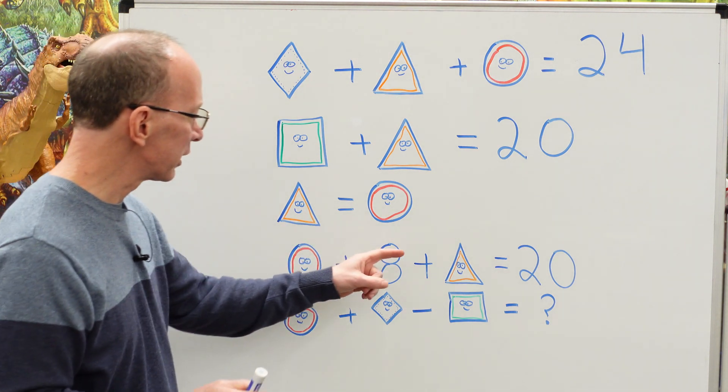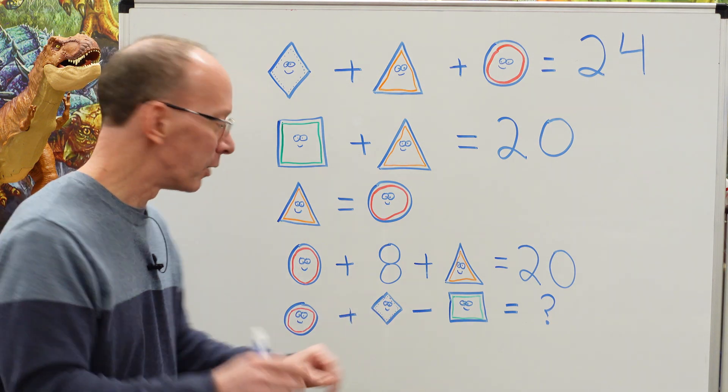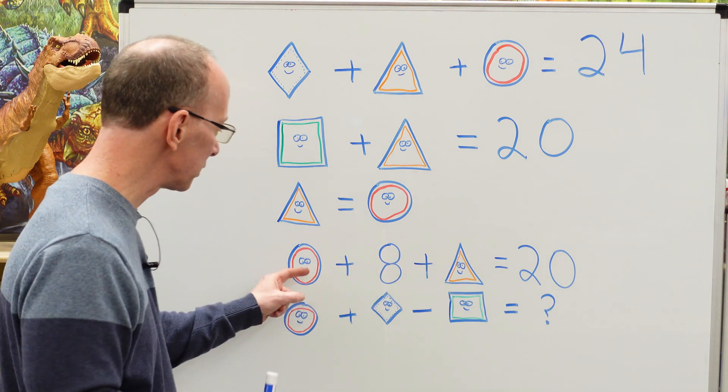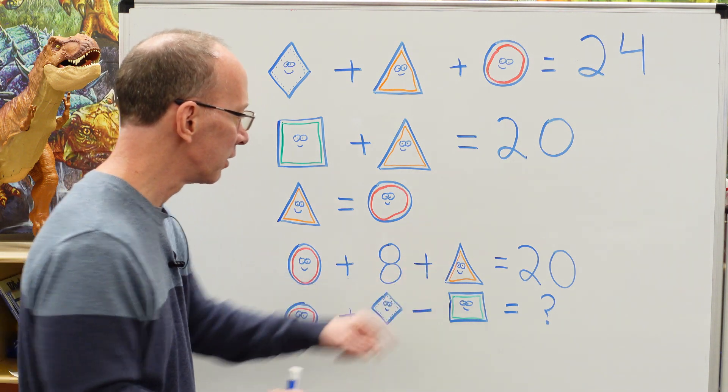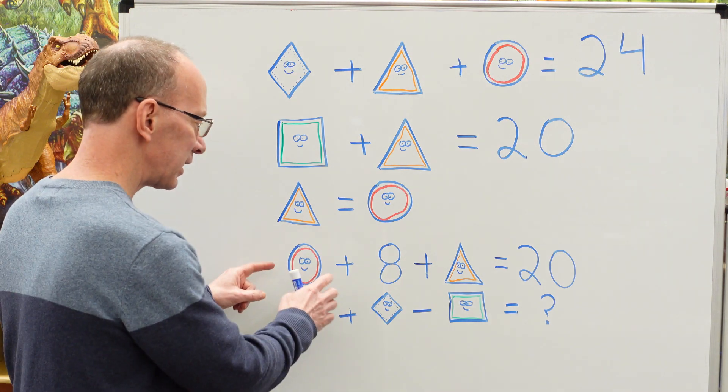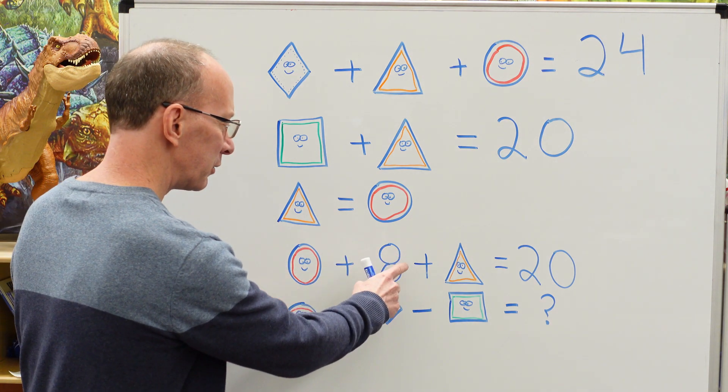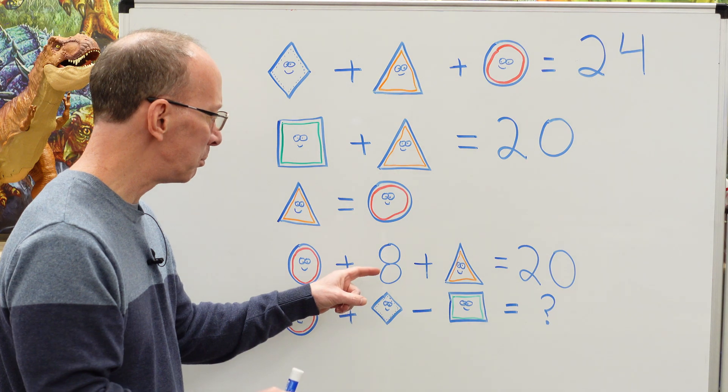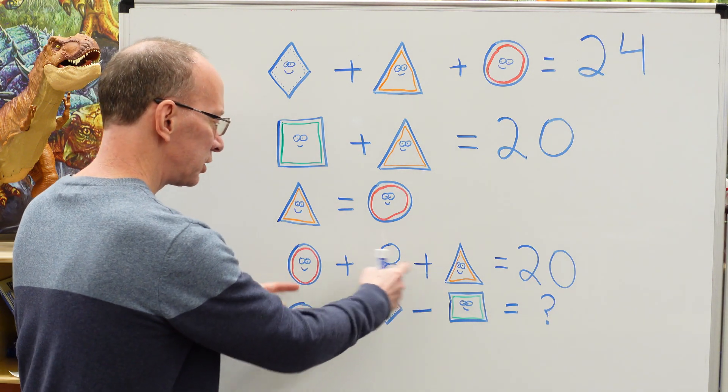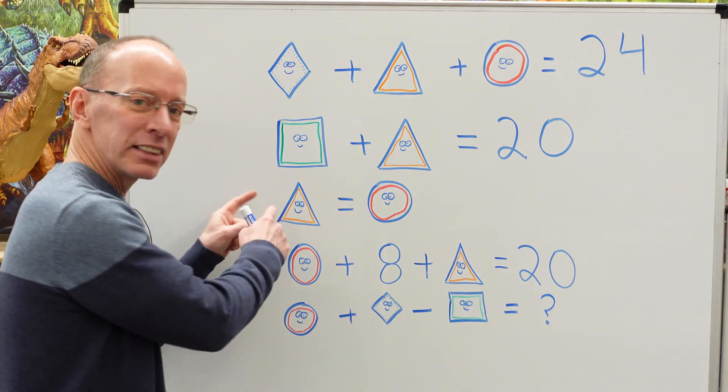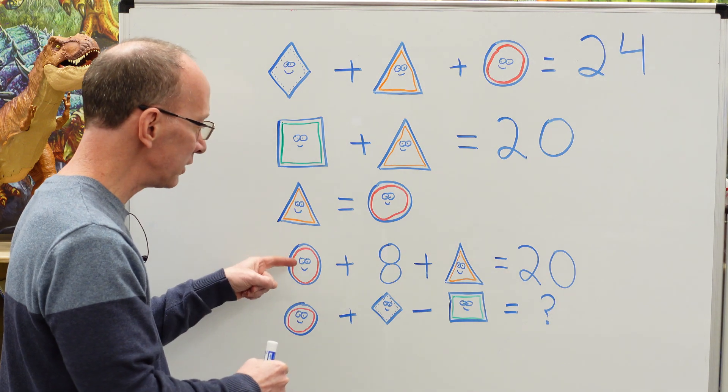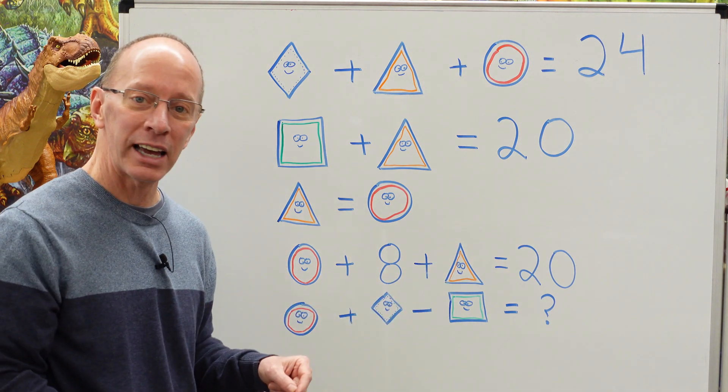Now I'm taking a look at this. This is like algebra in a way. And I see eight plus this shape and this shape, the circle and the triangle equals 20. So let me see. 20 minus eight would be 12. But I'm not sure what these two would equal. So look at this right here. The triangle equals the circle. So whatever this is, it's going to be the same as that one.